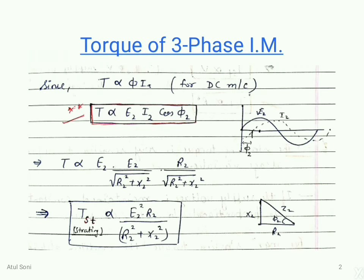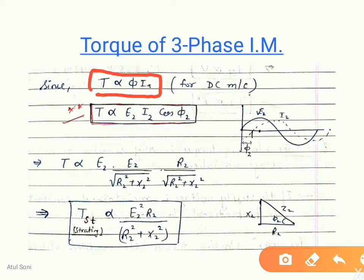We start with the torque developed in the 3-phase induction motor. Like a DC motor, the torque is proportional to the flux and the current flowing in the rotor — that means torque is directly proportional to φ × Ia. But the power factor of the rotor also significantly affects the torque produced. As E2 depends on flux, the torque of a 3-phase induction motor is represented as T ∝ E2 · I2 · cos φ2.